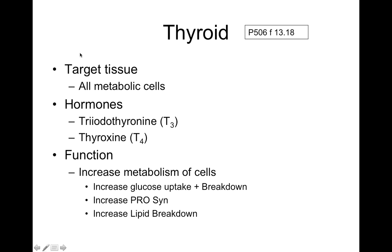The thyroid gland — you'll want to read this section carefully, as it tends to be a bit confusing. The thyroid gland targets all cells that use energy. The two hormones are triiodothyronine and thyroxine, T3 and T4. They increase the metabolism of those cells by causing glucose to be taken in and broken down, increasing lipid breakdown, and increasing protein synthesis. The thyroid gland is located just below the larynx and just in front of the trachea. Someone with hyperthyroidism has a higher basal metabolic rate — they're hyperactive and lose weight easily.